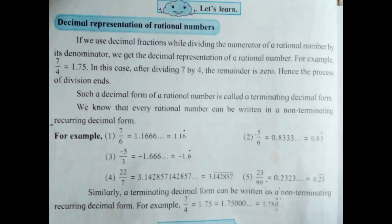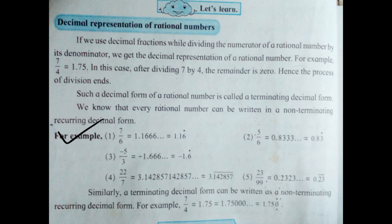We will now talk about non-terminating recurring decimal form. In non-terminating recurring decimal form, the division will be continued after the decimal point without getting the remainder 0. For example, if you divide 7 by 6, you will get the quotient 1.1666. After the decimal point, the digit 6 is repeating.